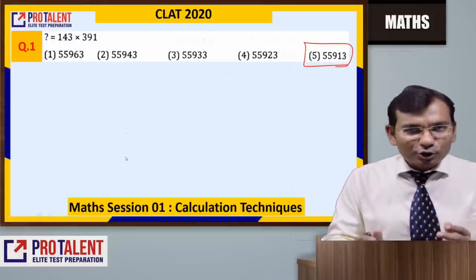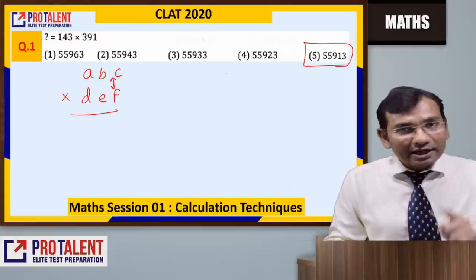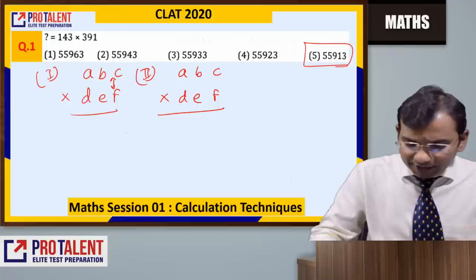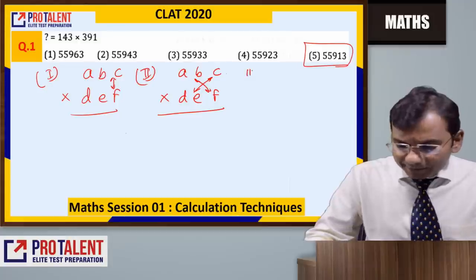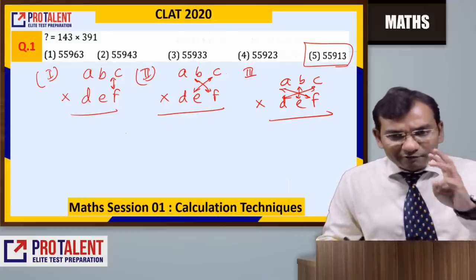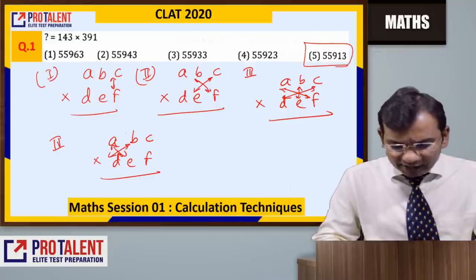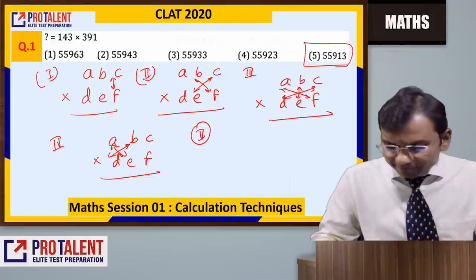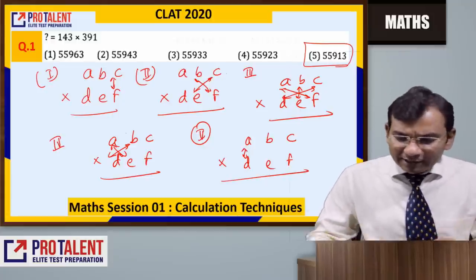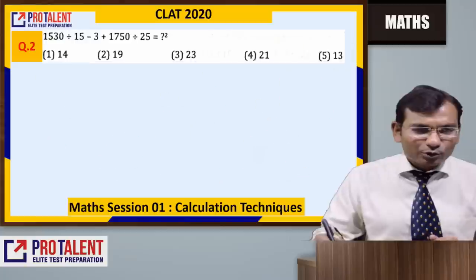Cross multiplication works as abc multiplied by def. Step 1: multiply the last digits, keep one digit, carry forward the rest. Step 2: cross multiplication of two pairs. Step 3: cross multiplication of three numbers. Step 4: cross multiplication back to two. Step 5: multiply the first digits a and d. You get the final answer. If options are given, just check unit digits — the answer would be 5.